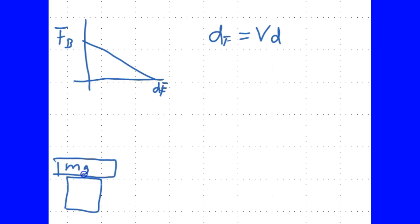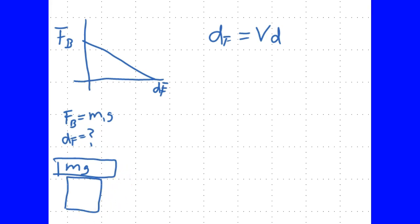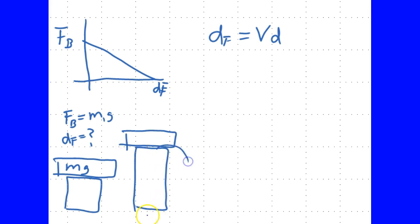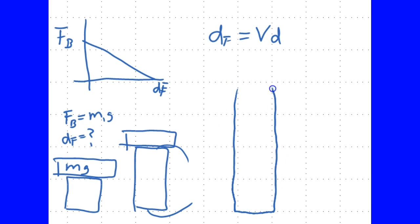A nicer way to look at it: we start with this big mass mg already on there. For a certain blocking force — say fb equals m1g — what's the free displacement? That free displacement is related to the electric field which needs to be applied to raise the material back to its original position of two blocks. This would be the blocking force, and this would be the electric field you'd need to apply. Normally, applying the electric field without the mass would give you a larger free displacement.